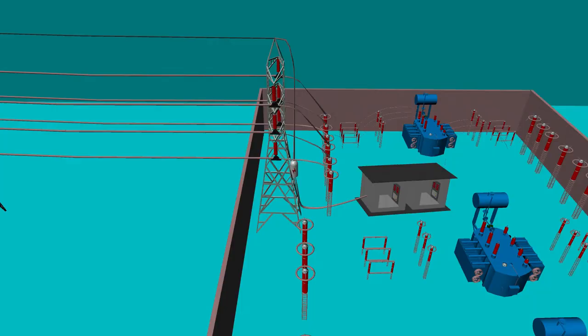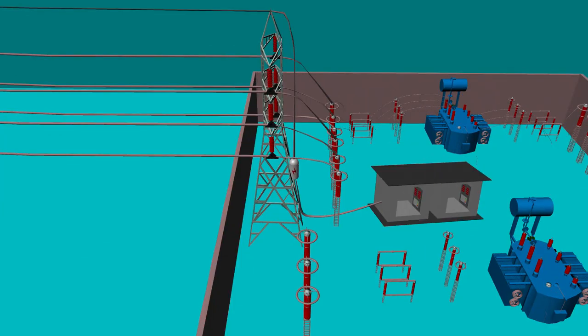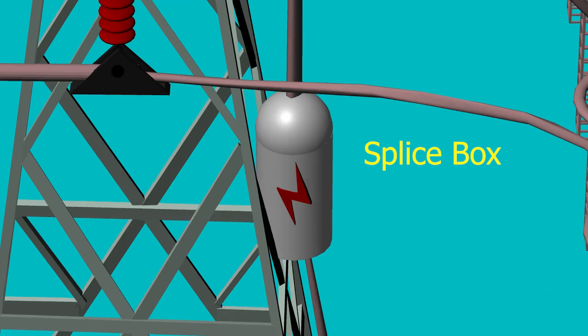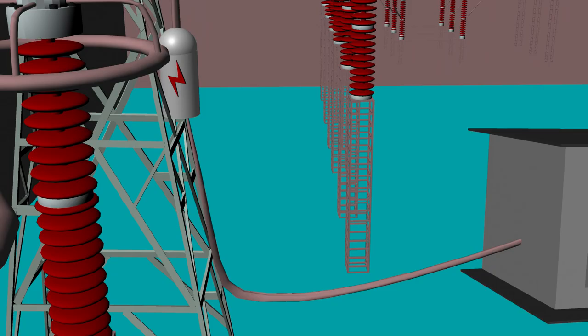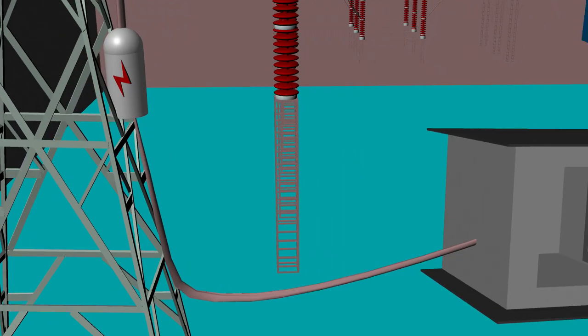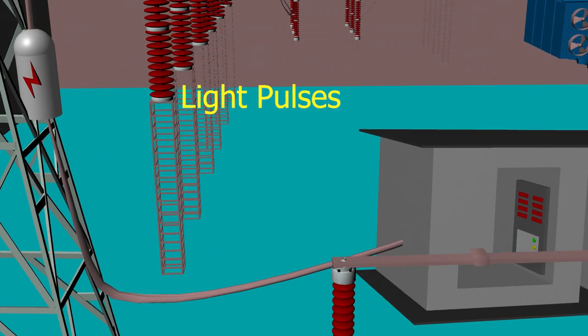These strands basically perform the same function as the earth wire. OPGW is connected to the control room in substation through the splice box installed on the tower. Inside the substation, inside the control unit or receiver side, the data transmitted by optical fibers in the form of light pulses is converted back to radio signals for further use for protection and control purposes.